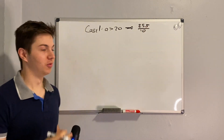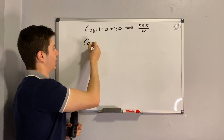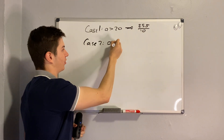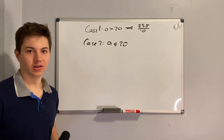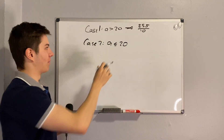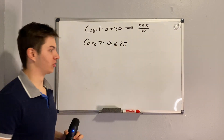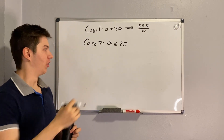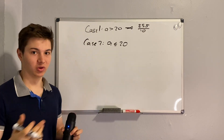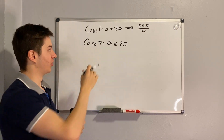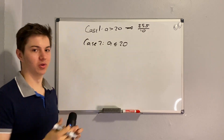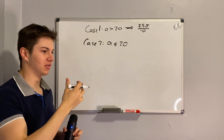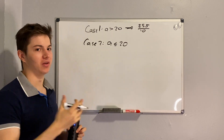Now let's move on to case two, where A is less than or equal to 20. In this case, either A can be greater than B — in which case we win A dollars — or A is less than or equal to B, in which case we lose B dollars.